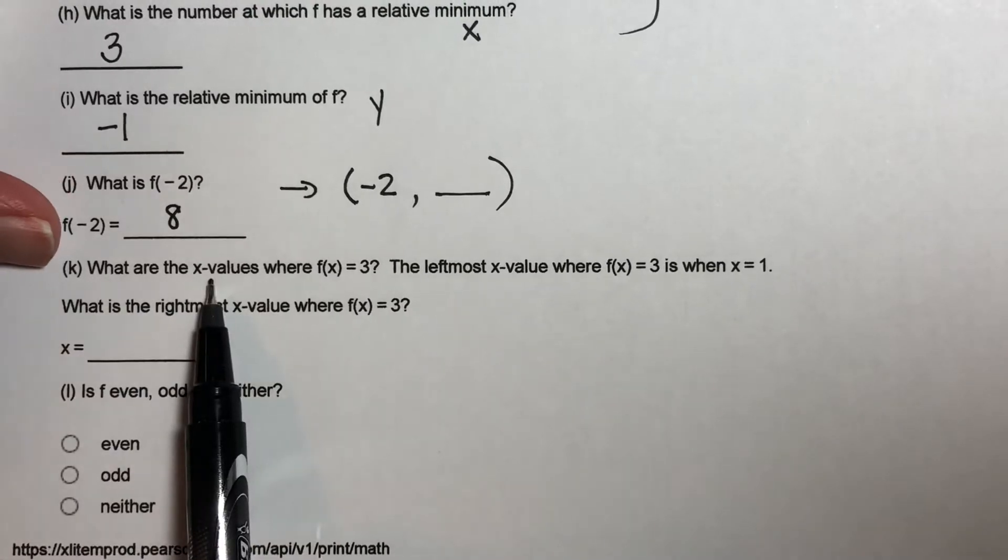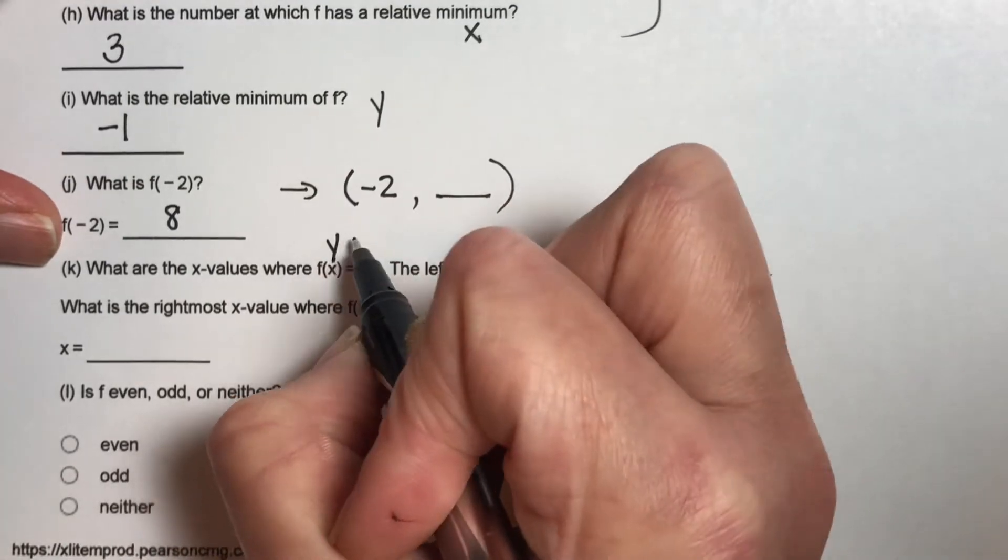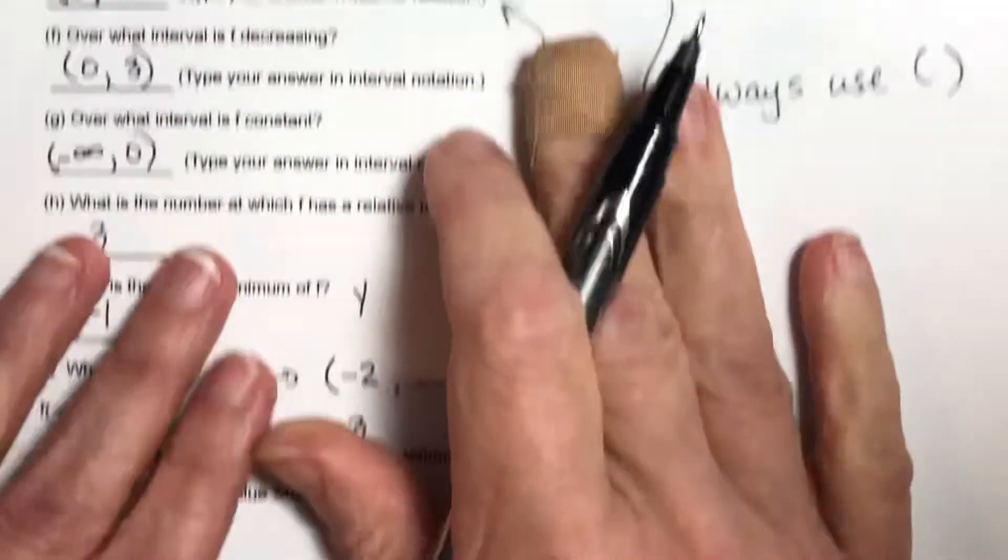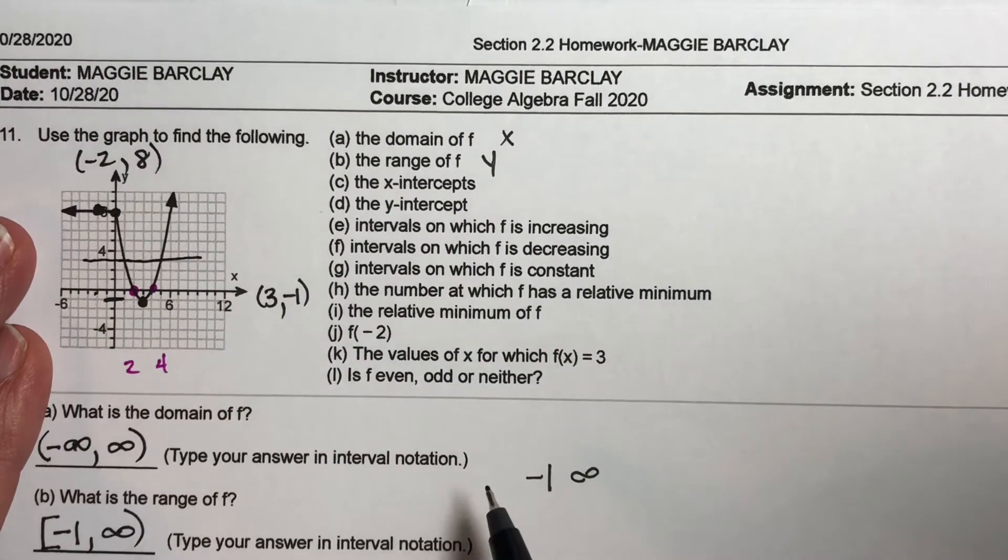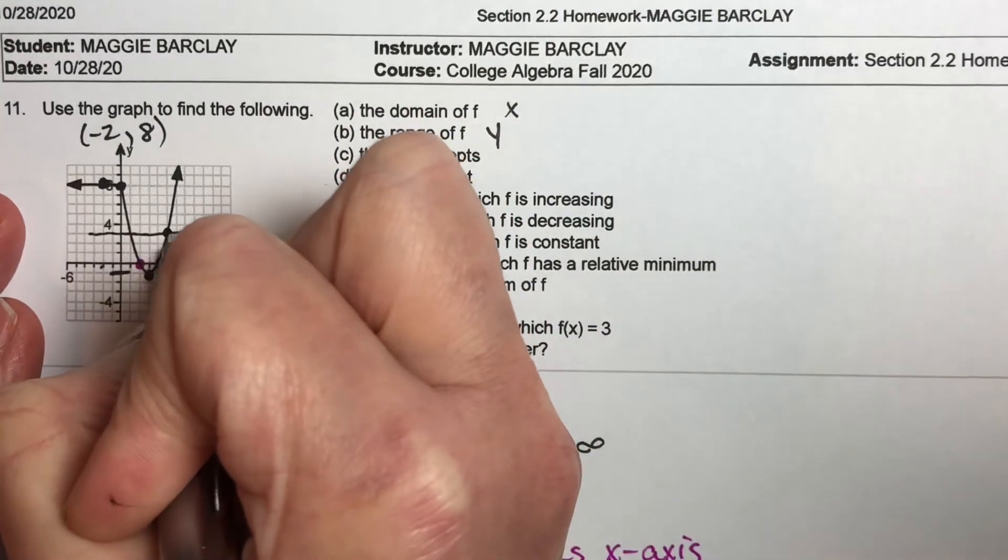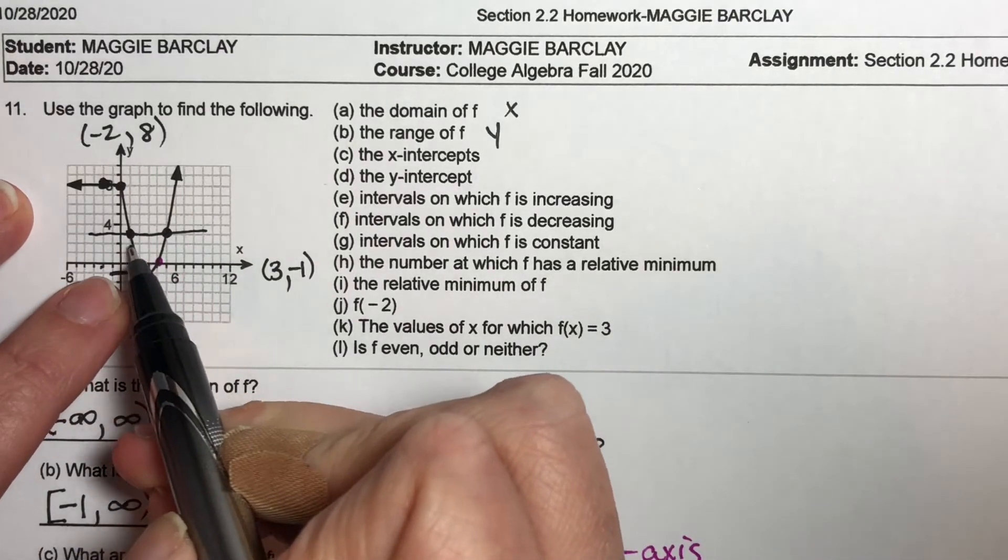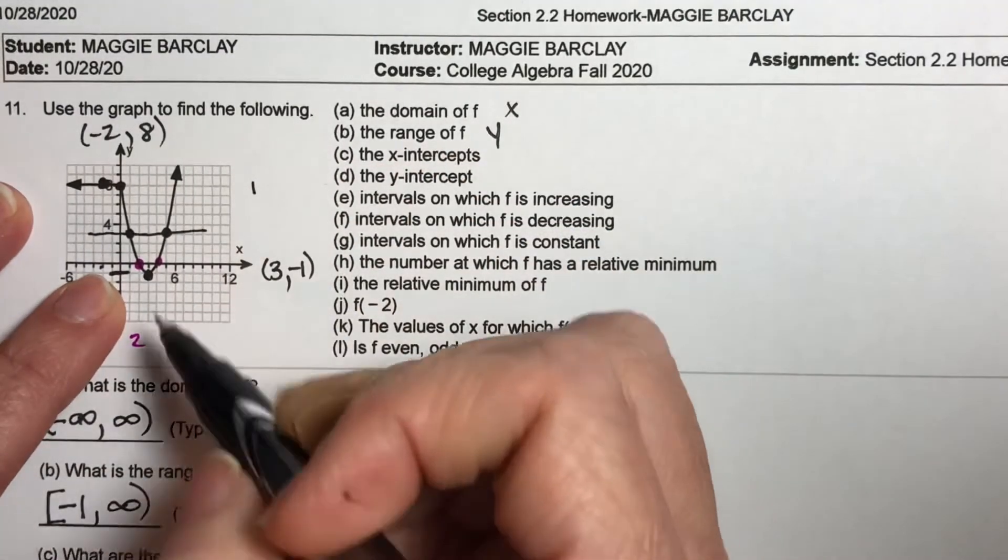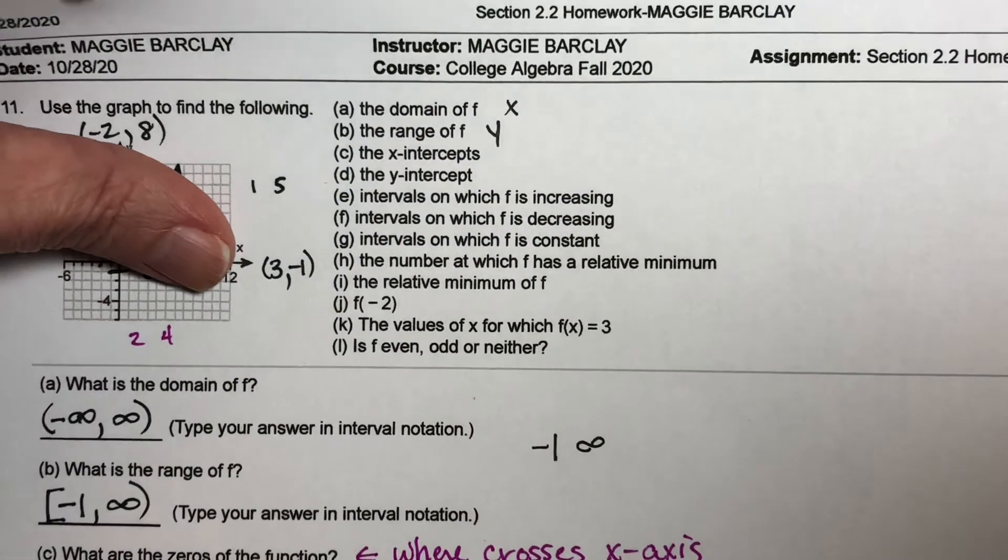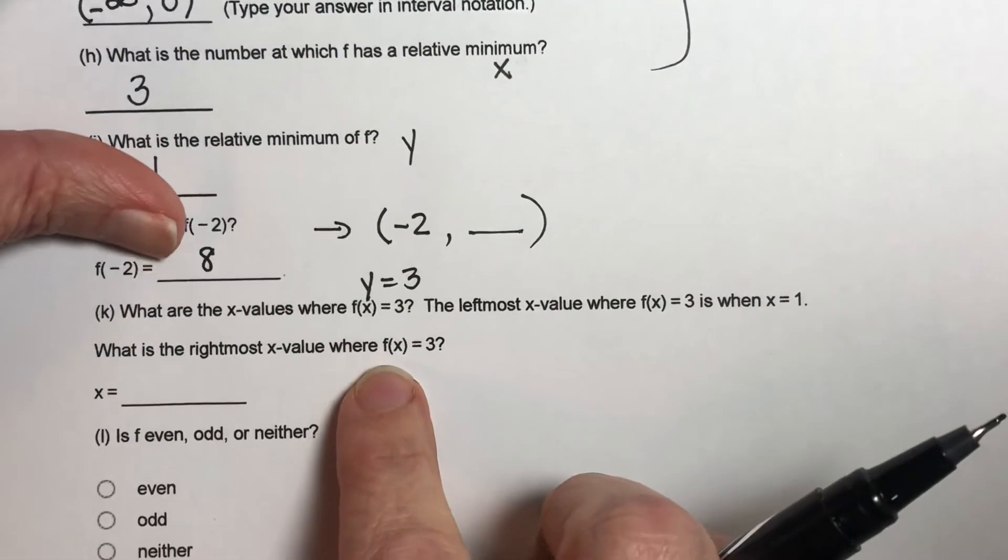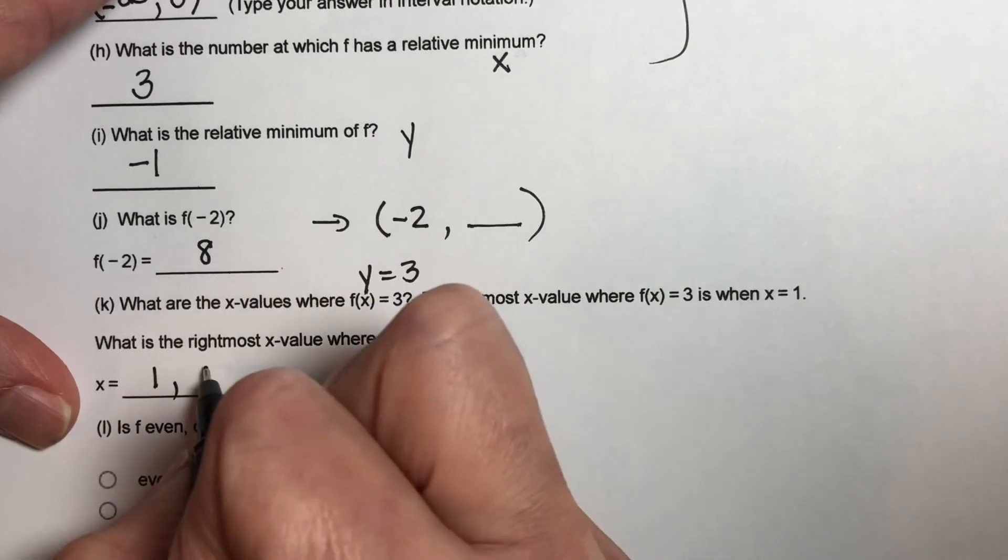What are the x values where f of x is equal to 3? So where is, think of this as y equal to 3. Where is our y value 3? Here's 3 right here, and these are our y values. So I'm looking for the x part of these two points, where my y was 3. This point has my x at 1, and this one has my x at 5. So for what x values is f of x equal to 3? It happens when x is 1, and also when x is 5.